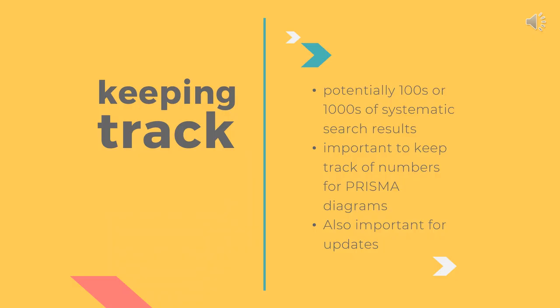Depending on your systematic review question or the publication rate in your field of interest, your systematic search could potentially retrieve hundreds or even thousands of references. It's really important that you can keep track of your references for your PRISMA flow diagram — for instance, how many studies you retrieved in total, the number of unique studies after duplicate removal, the number of studies included through screening, and the final number of studies included in your review.